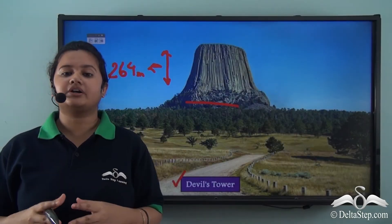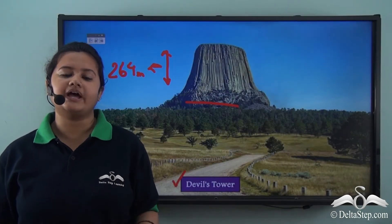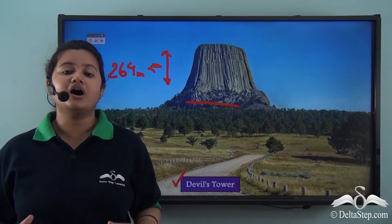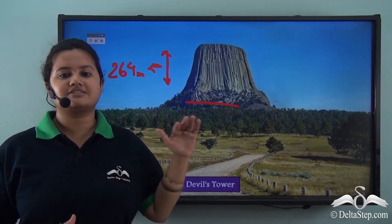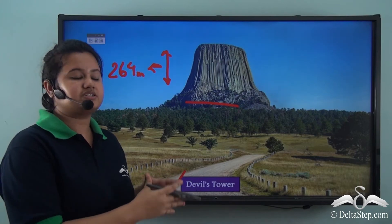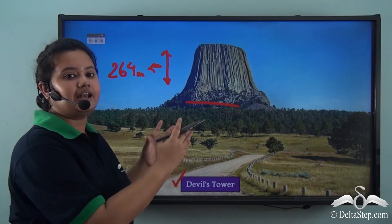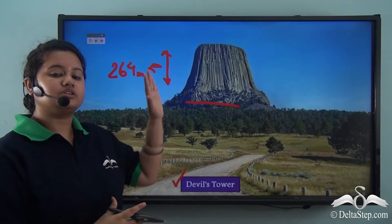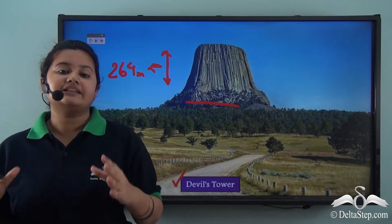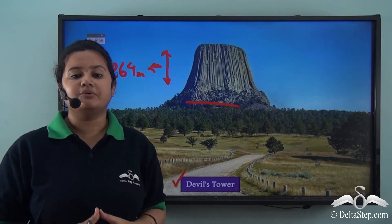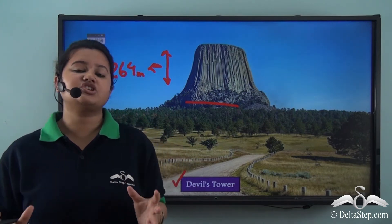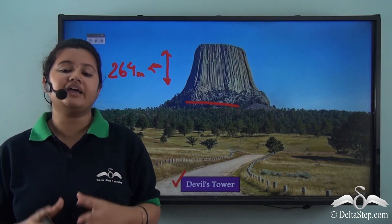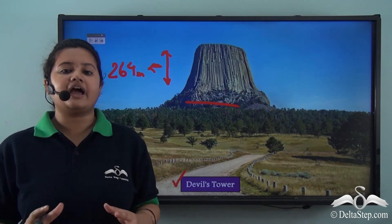This rock tower is situated in the United States. It was formed when magma forced its way into the earth's surface and was obstructed by a hard layer of rock, leading to this formation. So this is a remnant of a volcanic intrusion which has now been exposed by weathering and erosion.